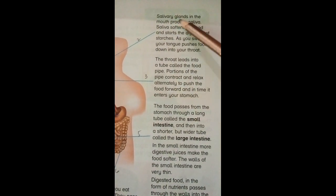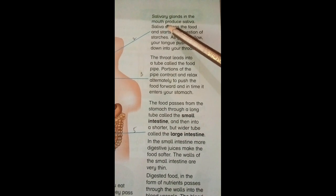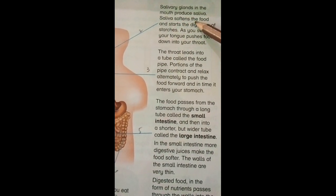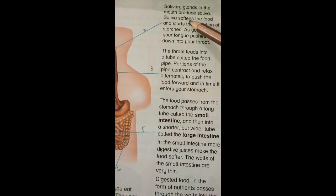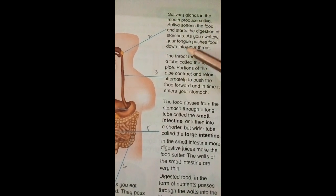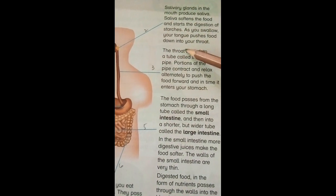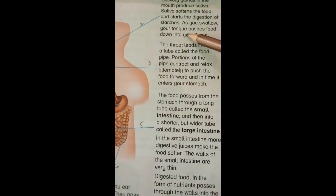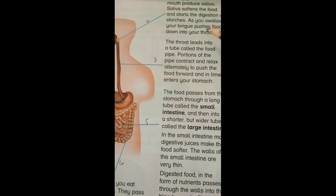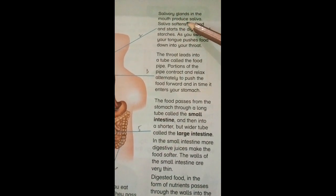Salivary glands in the mouth produce saliva. Saliva softens the food and starts the digestion of starches. As you swallow, your tongue pushes food down into your throat and through to your stomach. This is the function of salivary glands — they produce saliva.